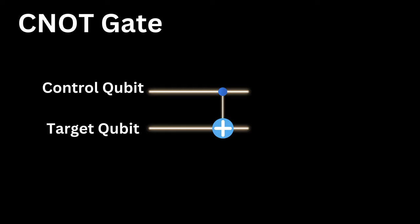In quantum computing, we use the control NOT or CNOT gate. This gate operates on two qubits. The first qubit is the control qubit, and the second one is the target qubit. If the control qubit is 0, then the target qubit remains unchanged.